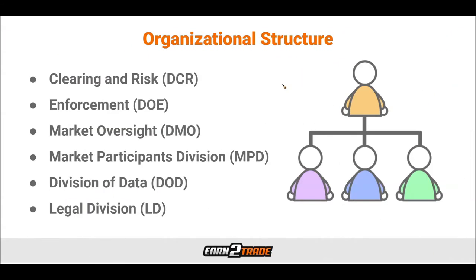The CFTC consists of five commissioners appointed by the President of the United States. One among these serves as the Chairman of the Committee. These positions are held for a tenure of five years and they do not become vacant at the same time. There are also 13 divisions and offices within the CFTC.